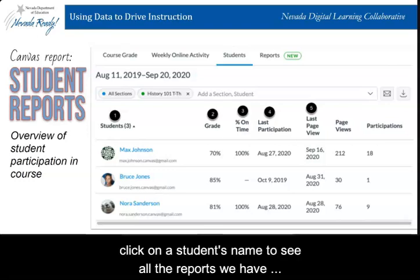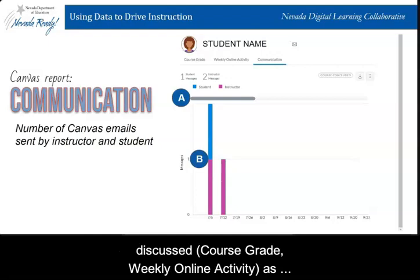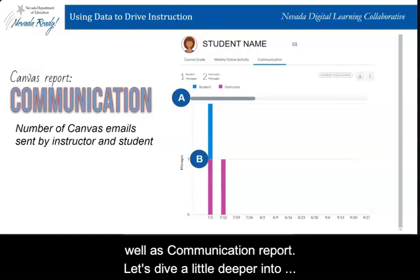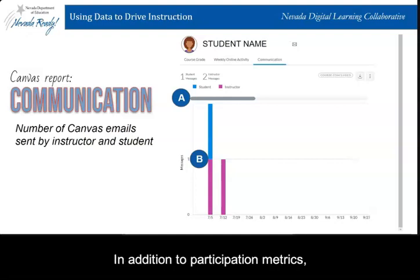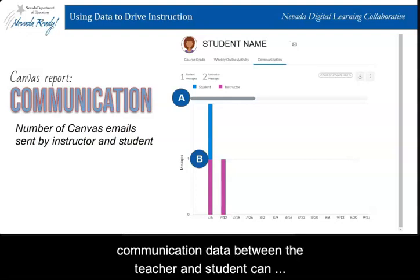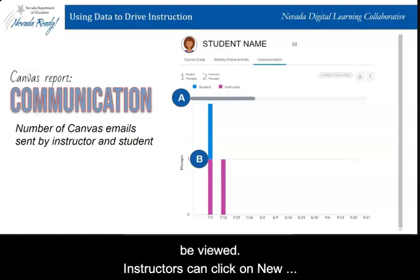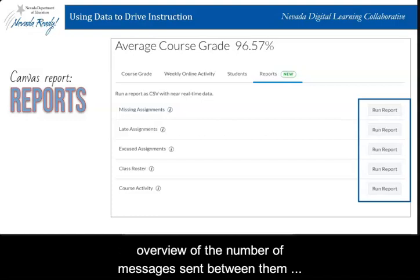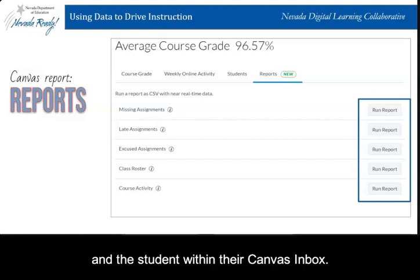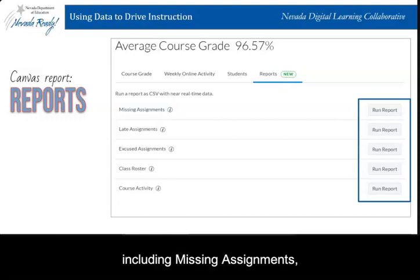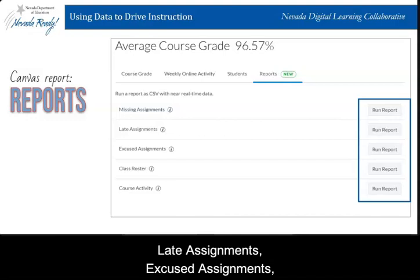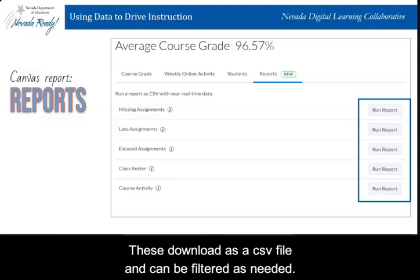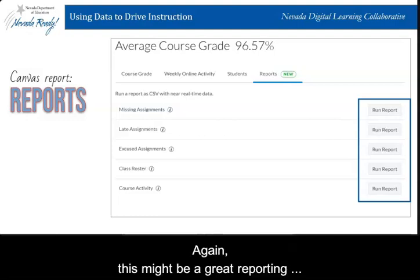Let's dive a little deeper into the communication report. In addition to participation metrics, communication data between the teacher and student can be viewed. Instructors can click on New Analytics, then Students, and select a student name to see an overview of the number of messages sent between them and the student within their Canvas inbox. Instructors can also run reports in Canvas, including missing assignments, late assignments, excused assignments, or a class roster and course activity. These can download as a CSV file and be filtered as needed. This might be a great reporting tool for conferencing with parents or students, as a missing grade report can be created, filtered by the student's name, and the portion related to that student may be printed or emailed directly to the student.